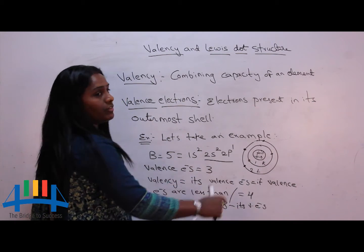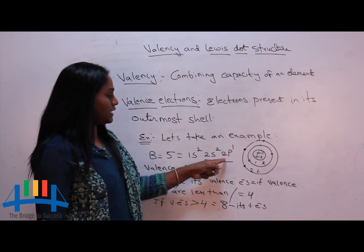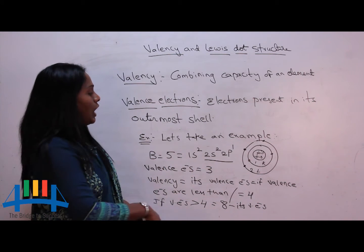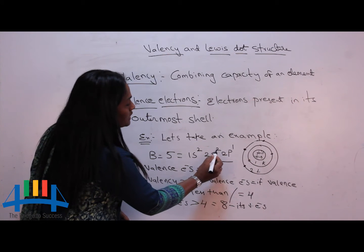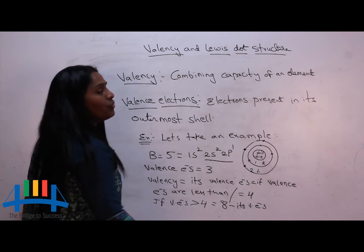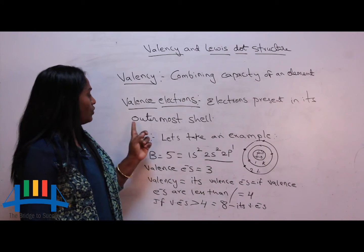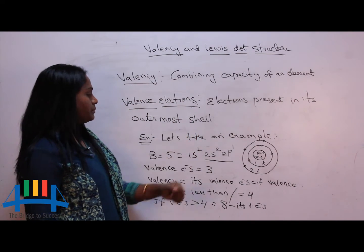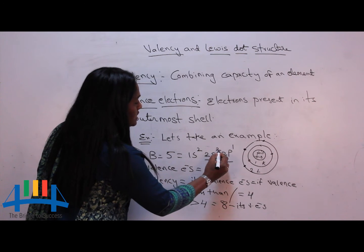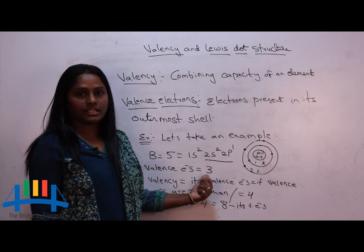Configuration: 1s2, 2s2, 2p1. According to this configuration, the outermost shell for boron is the last shell, that is shell 2. The second shell is called its outermost shell. How many electrons are present in the outermost shell? Count: 2 plus 1. The electrons present in the outermost shell are called valence electrons, and the number of valence electrons for boron is 3.